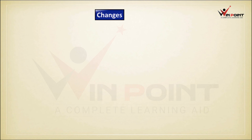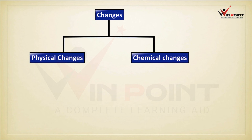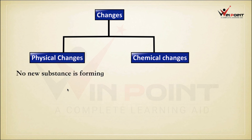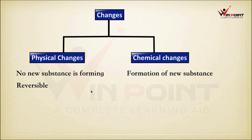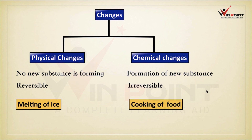Now we discuss changes. There are two types: physical and chemical. Physical changes are reversible — no new substance is formed, for example, the melting of ice, which can be converted back. Chemical changes are irreversible — a new substance is formed and cannot be reversed, for example, burning wood produces ash that cannot be converted back to wood. Another example of chemical change is cooking of food.